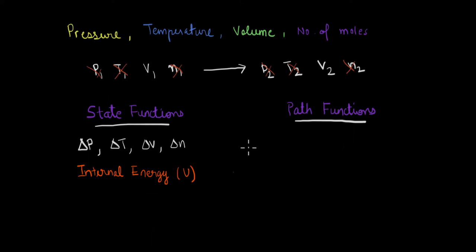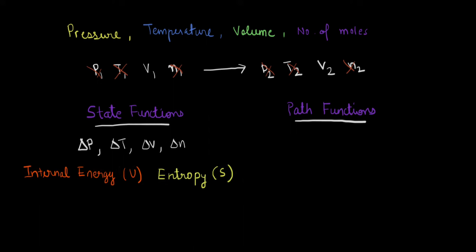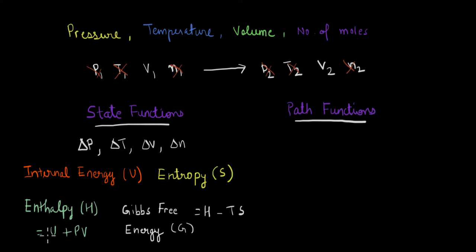Another state function is internal energy, denoted by U. If you think of a box with gas molecules, internal energy is a sum of different energies like rotational energy of molecules or bond energies — a catch-all term. There is also entropy, denoted by S, which is a measure of how order in a system changes from state 1 to state 2. State functions can also be combinations of other state functions: enthalpy is internal energy plus pressure times volume, and Gibbs free energy is enthalpy minus temperature times entropy.